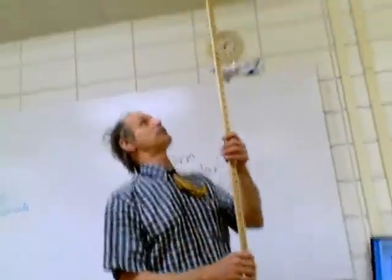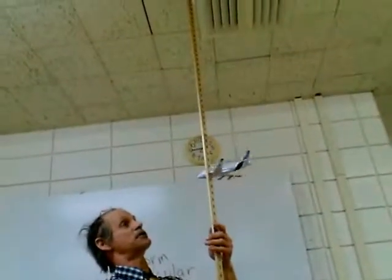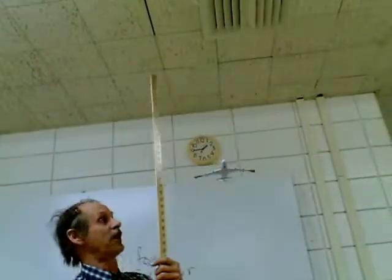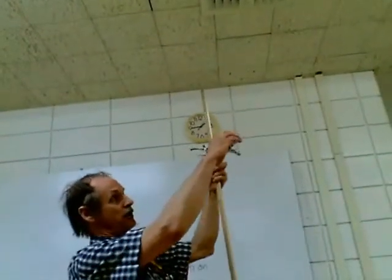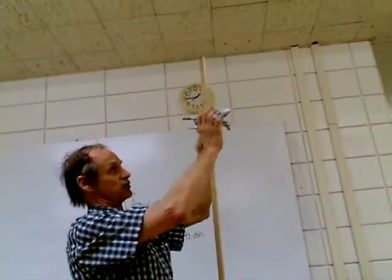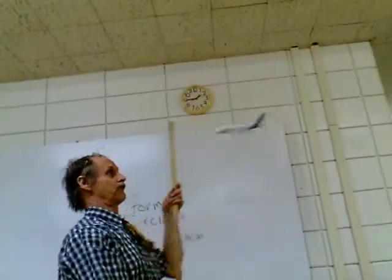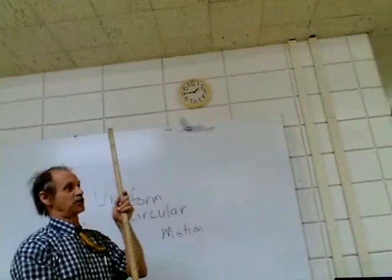First thing you're going to do is measure the length of this wire from the ceiling and record that. Then you're going to get the plane going, so start it up. Give it a little push in a circle.